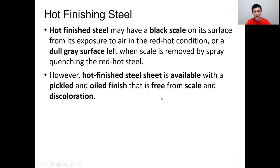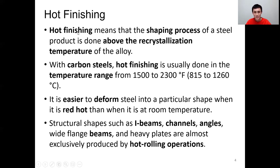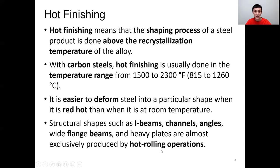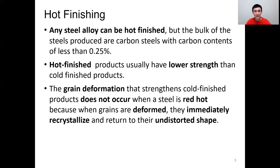Hot finished steel is also available free from scale or discoloration. Hot finishing means we shape the material in the hot red condition, usually above the recrystallization temperature — the austenite temperature — above 1500°F or 815°C. It is intuitively easier to deform steel in the red hot condition than at room temperature. Typical structural shapes such as I-beams, channels, angles, wide flange beams, and other heavy plates are almost always produced by hot rolling processes, and any steel alloy can be hot finished.